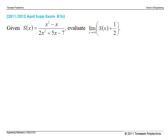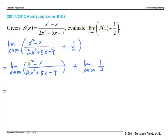In another problem, the leading terms are x² in the numerator and 2x² in the denominator. Since x² and x² are growing at the same rate, the answer for this limit is the ratio of the coefficients, namely one half. And since the limit of a constant is constant, this is also one half. So the answer is 1.